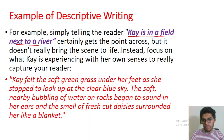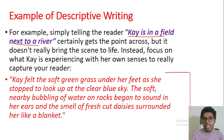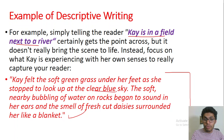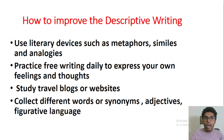But it does not really bring the scene to life. Instead, focusing on what a character is experiencing with her own senses, you can capture your reader. For example: 'Kay felt the soft green grass under her feet as she stopped to look up at the clear blue sky. The soft nearby bubbling of water on rocks began to sound in her ears, and the smell of fresh cut daisies surrounded her like a blanket.' When you use adjectives and sensory details like that, it becomes more vivid and clear to the reader.